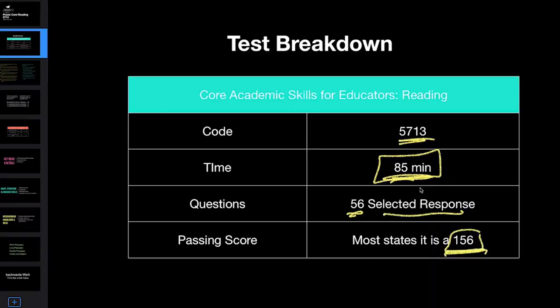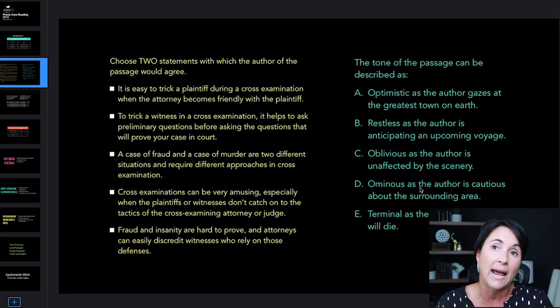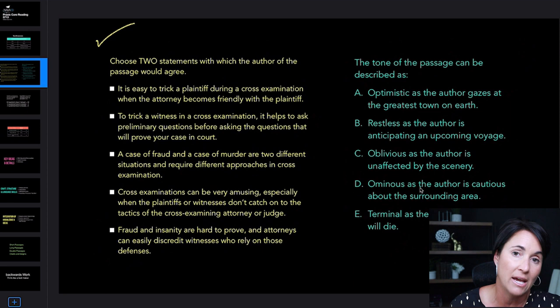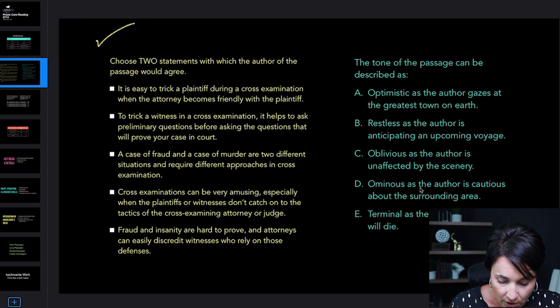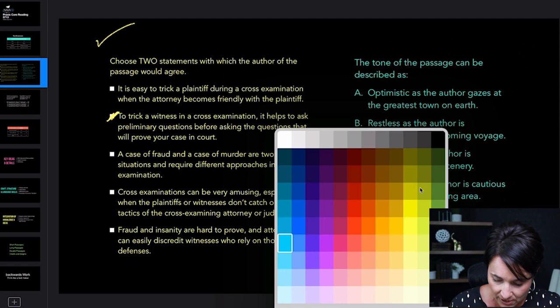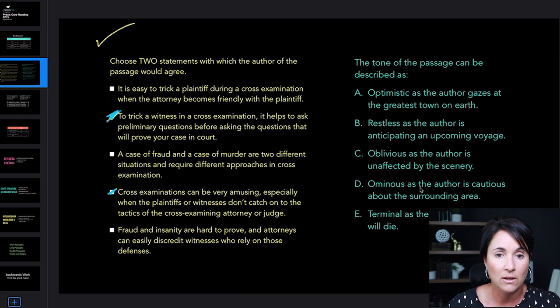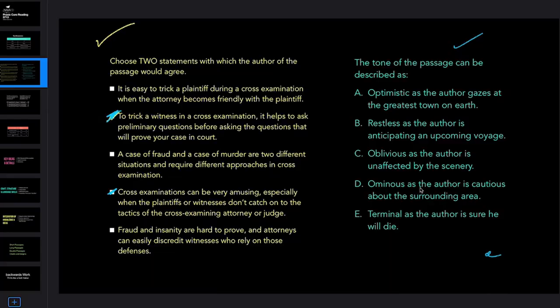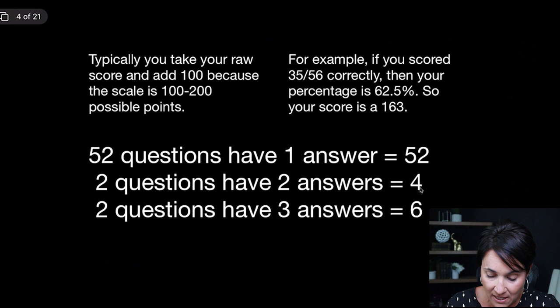Let's break it down. You're going to have different types of questions — some where you choose one answer choice and some where you choose more than one. Take a look at this question: it says 'choose two statements which the author of the passage would agree.' So in that case you pick two. Other questions want you to choose just one. This is where scoring can get tricky. I want people to understand how the test is scored — not so you obsess over individual points, but because it helps to understand how your scores work. And the Praxis is kind of unique in how they do this.